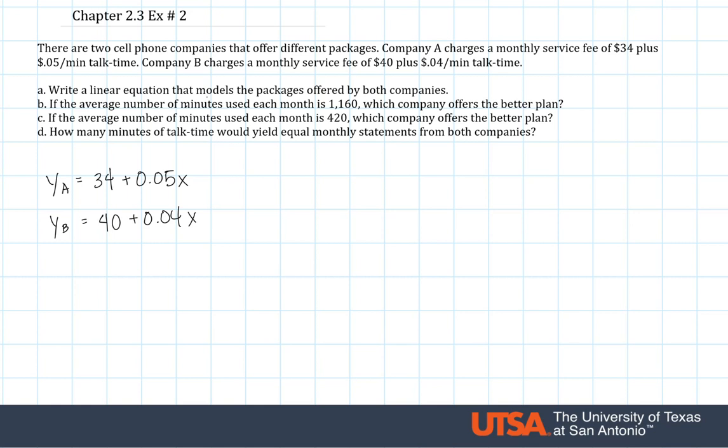For part B, it asks if the average number of minutes used each month is 1,160, which company offers the better plan? So now we have our equations that model how much it costs given how many minutes used. So what we would do is we let x equal 1,160 and we essentially just plug it into YA and YB. So for the first one, we have YA equals 34 plus 0.05 times these minutes. And then this would give me 58 plus 34. So at 1,160 minutes, company A will charge you $92.